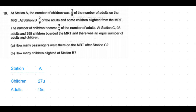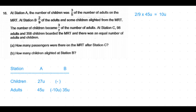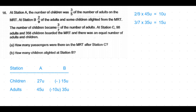We can now find two-ninths of the adults: two-ninths of 45 units is 10 units. These 10 units alighted at Station B, so 35 units of adults remain after Station B. Some children also alighted, and the number of children became three-sevenths of the adults. Three-sevenths of 35 units is 15 units, so 15 units of children remain at Station B.